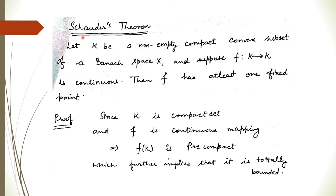Now Schauder's theorem states: let K be a non-empty compact convex subset of a Banach space X, and suppose F is a continuous mapping from K to K. Then F has at least one fixed point.